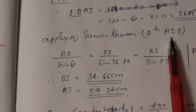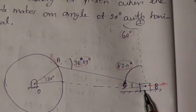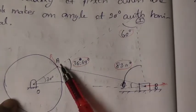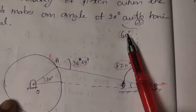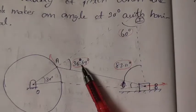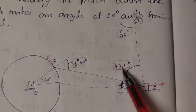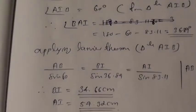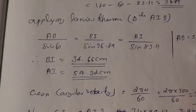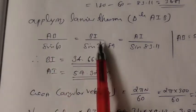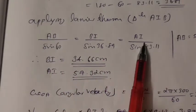Applying Lamy's theorem to triangle AIB: AB divided by sin 60 equals BI divided by sin 36.89 equals AI divided by sin 83.11. Substituting AB equal to 50 centimeters and solving the first two equations gives BI equal to 54.66 centimeters, and from the first and last equations AI equals 57.32 centimeters.